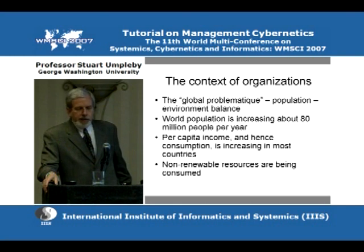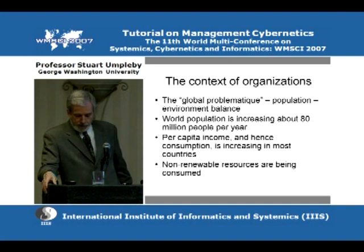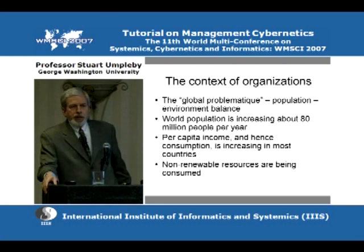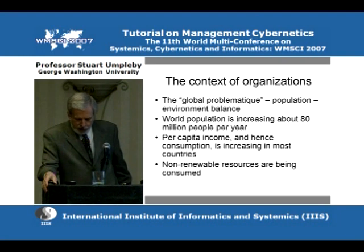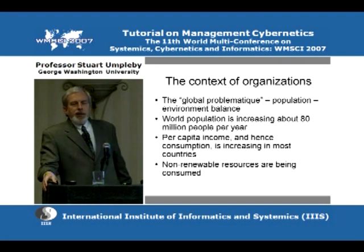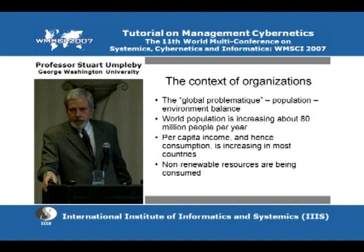One of the ideas that came up in discussions of futures research was the world problematique, which basically meant ecological problems: population, environment, resources. The world population is increasing currently at about 80 million people per year — about every four years we add as many people as exist in the United States. In addition to a rising world population, we also have rising per capita incomes. That's good because it means people are living better, but it means that on average each person is creating a greater load on the environment in terms of consuming energy and resources.